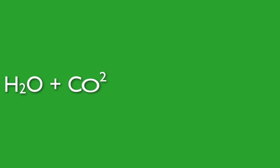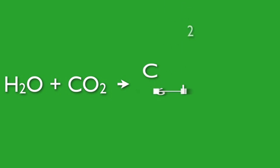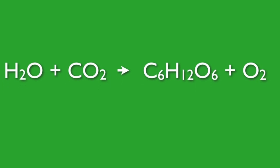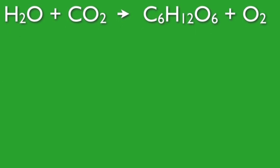Once inside the leaves of plants, the photosynthesis equation can begin. Inside the leaves, water and carbon dioxide, with the help of the sun, is turned into glucose and oxygen.